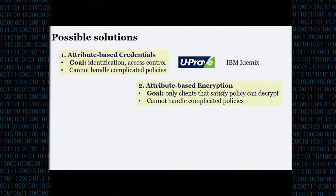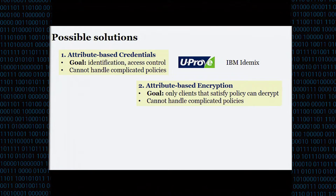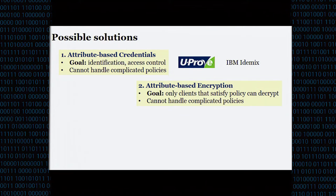Likewise, we can try to construct this using attribute-based encryption. Here the idea is that a party can decrypt some value if it satisfies the policy that the ciphertext was encrypted under. But again, ABE doesn't work for complicated policies in terms of practically efficient constructions.